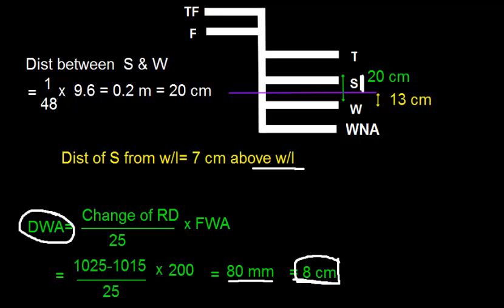The meaning of dock water allowance is that here the density is 1 and here the density is 1.025. If the vessel is in dock water, the density is somewhere between 1 and 1.025. If the vessel goes in salt water, the vessel will sink to here.